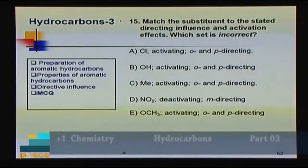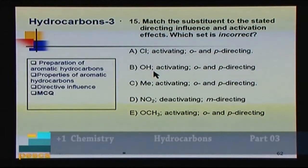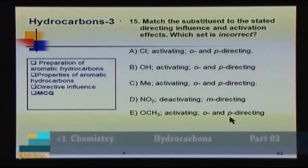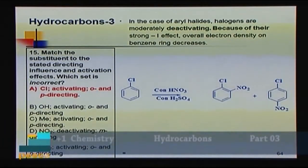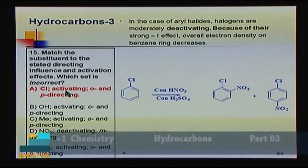Question 15: Match the substituent to its directing influence and activation effect — which set is incorrect? A) Cl: activating, ortho-para directing; B) –OH: activating, ortho-para directing; C) –CH₃: activating, ortho-para directing; D) –NO₂: deactivating, meta-directing; E) –OCH₃: activating, ortho-para directing. Halogens are ortho-para directing but are moderately deactivating (not activating) due to the electron-withdrawing inductive effect. So set A is incorrect. Answer: A.